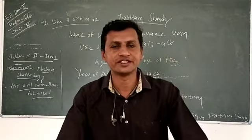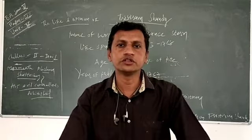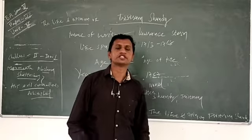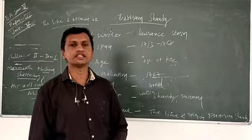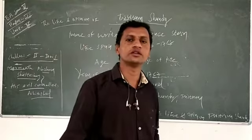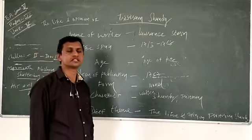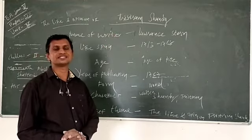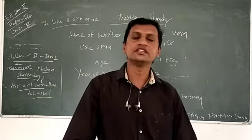Hello dear students, today we discuss Paper 7: Introduction to Restoration Age and Age of Pope. We discussed Unit 4 on short notes. In this unit, we have to compare more than 12 short notes. Today we discuss one more short note: Tristram Shandy. Do you know about the rise of the novel?